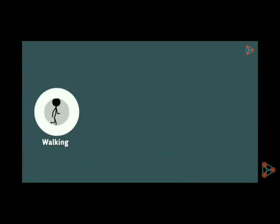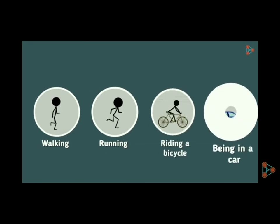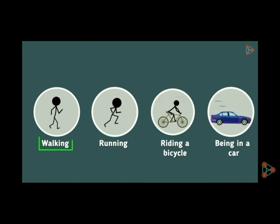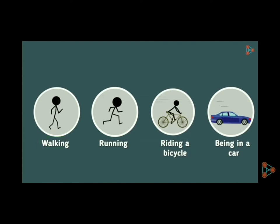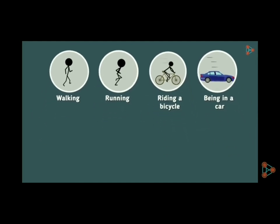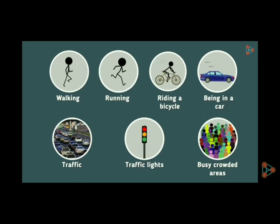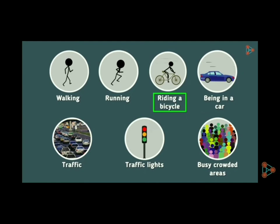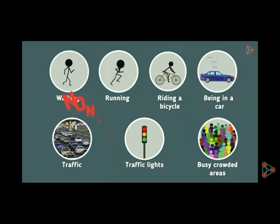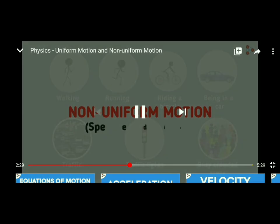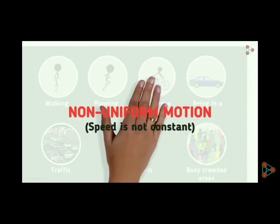Suppose you are walking, running, riding a bicycle, or you are in a car. While walking or running, as you get tired your speed decreases. For a cycle or car, external conditions also affect speed — if there is traffic or a crowded area, your speed decreases or increases. So when your speed is not constant, or when your speed is changing, that means the motion is non-uniform motion.